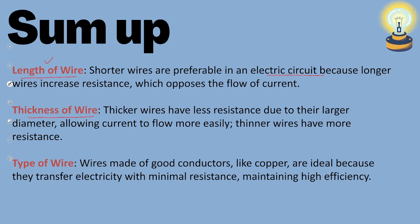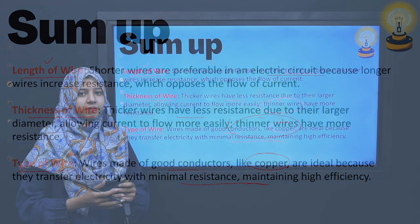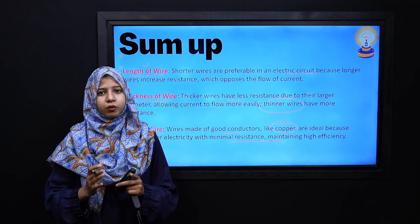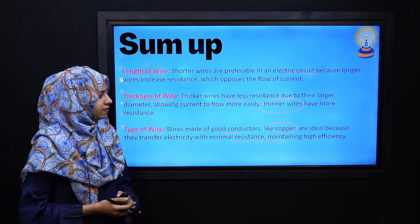When it comes to the thickness of wire, thicker wires have lesser resistance due to their larger diameter and allow the current to flow easily, as compared to thinner wires which have more resistance. And regarding the type of wire, wires made of good conductors like copper are ideal because they have less resistance, transfer electricity with minimal loss, and maintain high efficiency. We use those parts to create electric circuits so that resistance is reduced and current can flow easily at full efficiency.